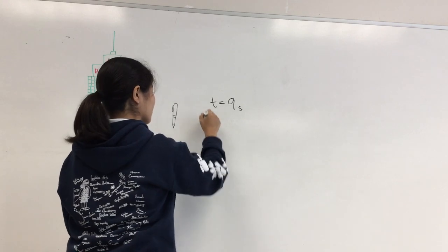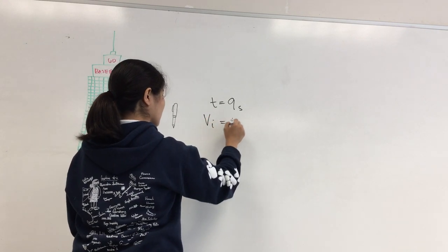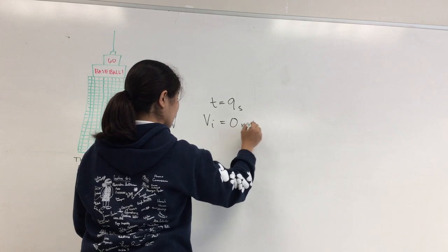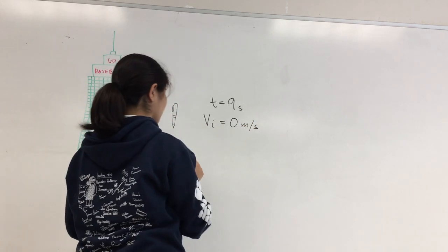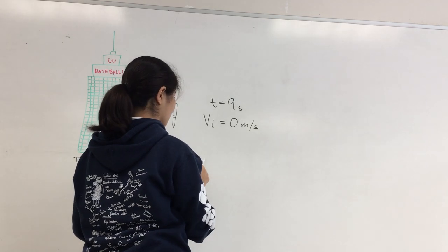Since we know that the initial velocity is 0 meters per second, if we figure out the final velocity of the pen, we can solve for the average velocity and find out the height of the Empire State Building.